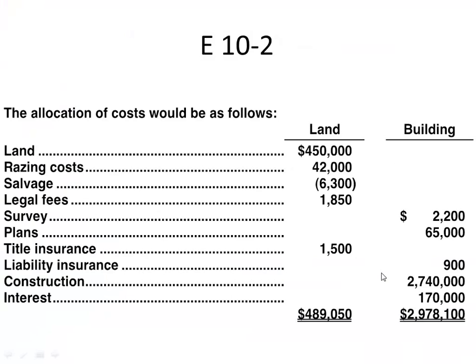When you allocate between land and building, this is how you split the costs up. I'm going to put this up and point to some things I think are very important. The cost of your property includes anything that's on that closing statement — things like legal fees, title insurance. You're always going to see these items.